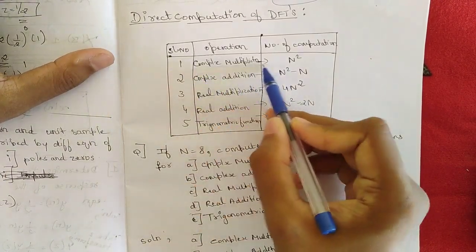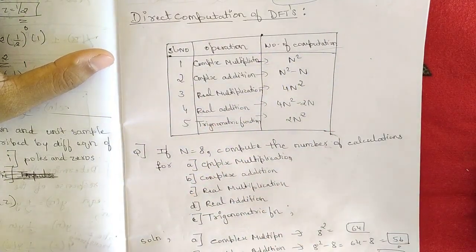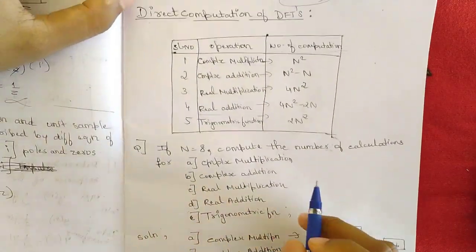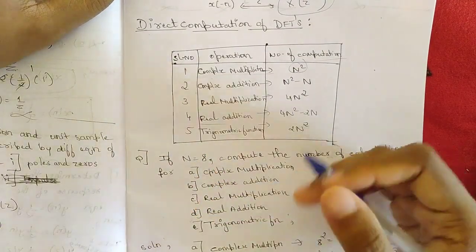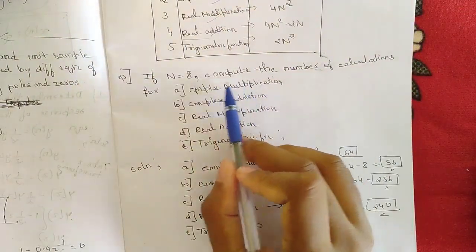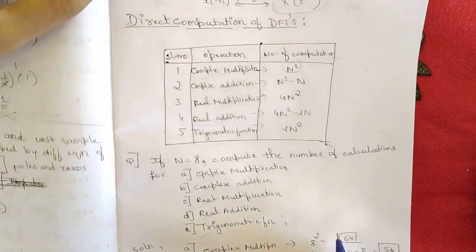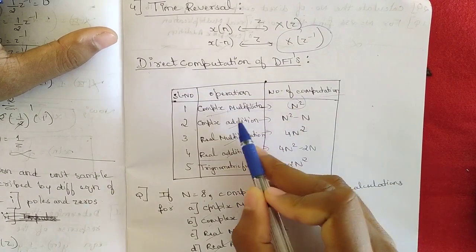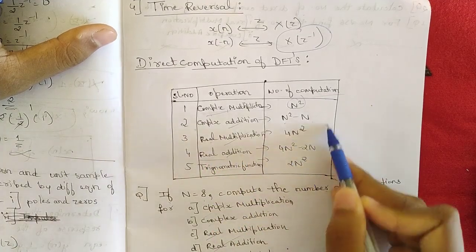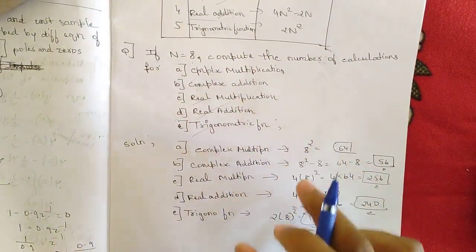Now, direct computation of the DFT involves: complex multiplication, complex addition, real multiplication, real addition, and trigonometric functions. The number of computations for each, given N points, is: complex multiplication = N², complex addition = N² - N, real multiplication = 4N², real addition = 4N² - 2N, and trigonometric functions = 2N². This table is very important to remember.